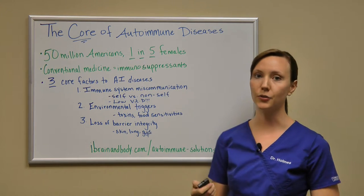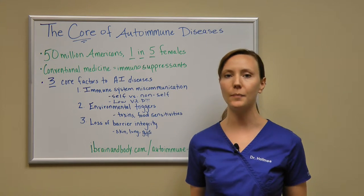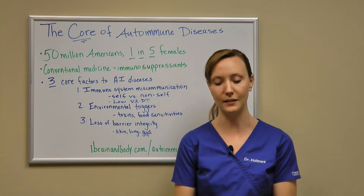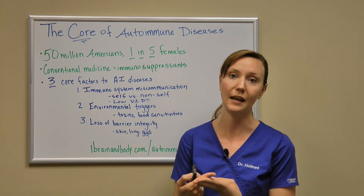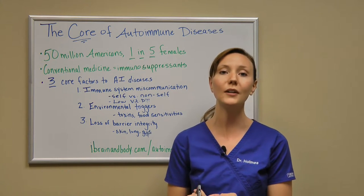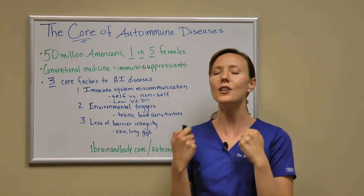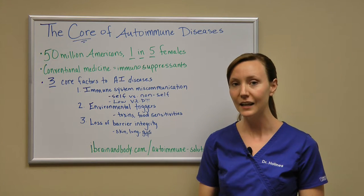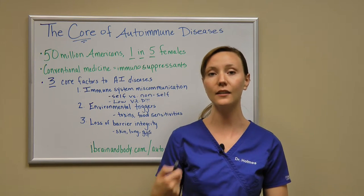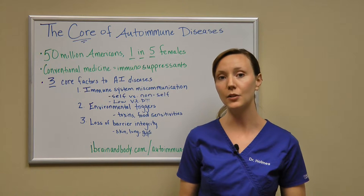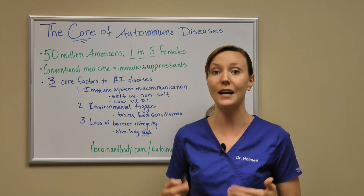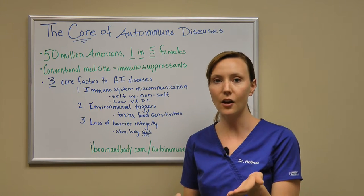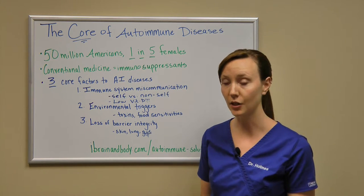Number two is environmental triggers. We are surrounded by toxins on a daily basis, from car exhaust to the lotions we put on our bodies, to the makeup that we wear every day, and even our food. Americans love their food and have a huge emotional connection to it. If you have a food sensitivity, it can definitely be causing a lot of immune system dysregulation because it's considered a toxin to your body. It's really important to determine whether that food is causing a sensitivity in your body.